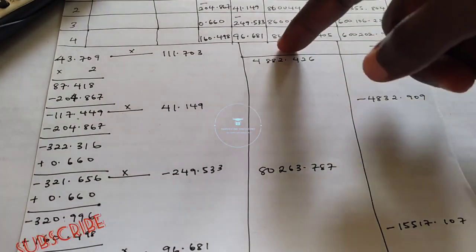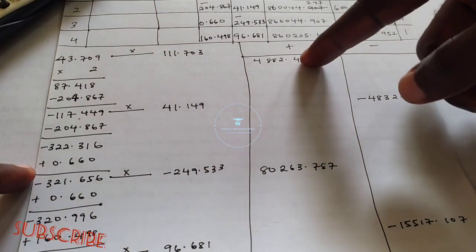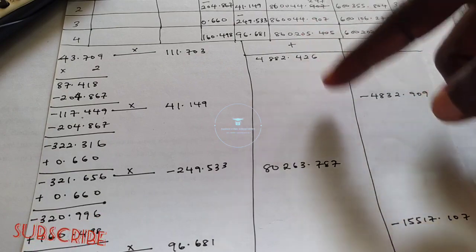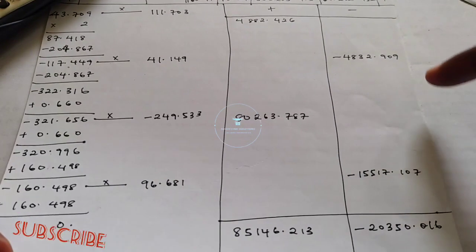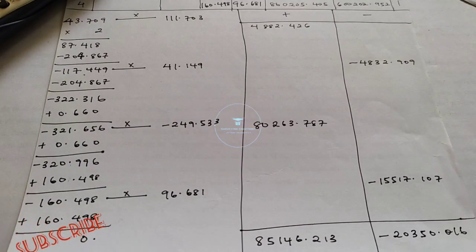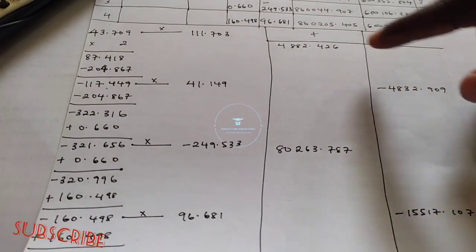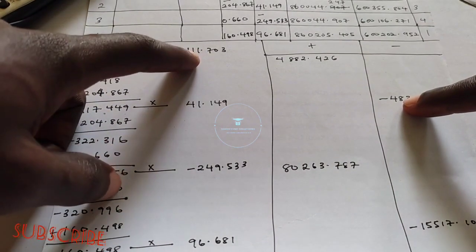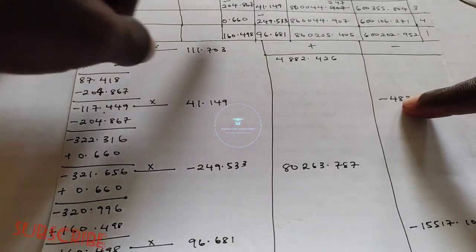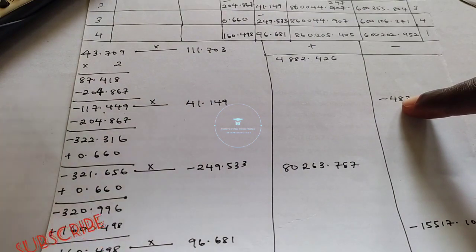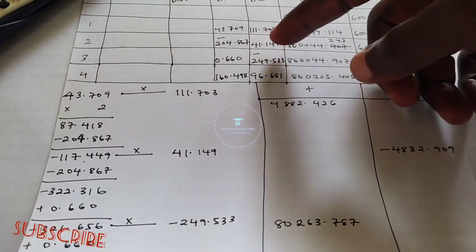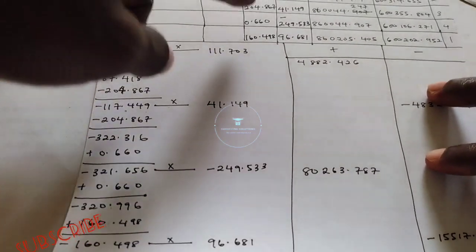Regarding the plus and minus columns: when you do your multiplication, some products will be positive and some will be negative. When the product is positive, fill it under the positive column; when negative, fill it under the negative column. Please press your calculator to check. Now, since we know how to place the corresponding delta eastings, we multiply them. For the first one, you use delta easting 111.703 — not the delta easting from the back computation position, but the correct corresponding one.